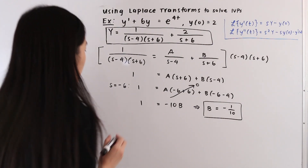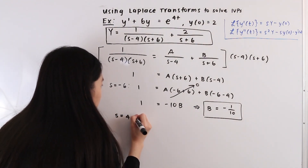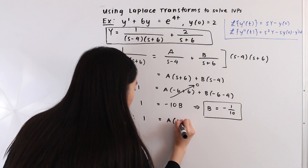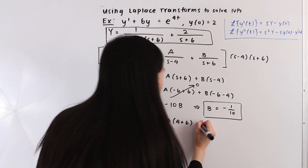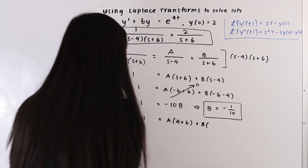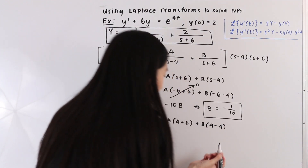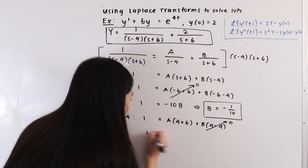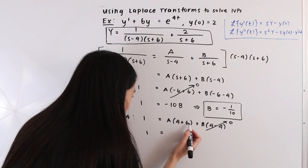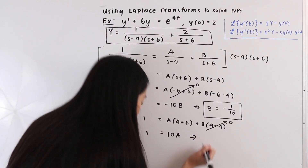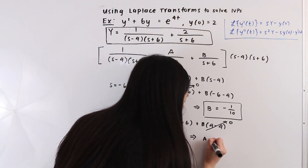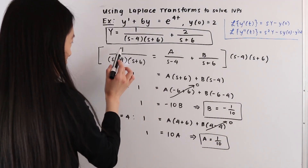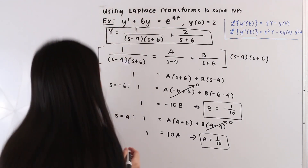Next, setting s = 4: 1 = A·(4 + 6) + B·(4 - 4). Since 4 - 4 = 0, that term vanishes and we get 1 = A·10, so A = 1/10. Therefore we can rewrite 1/[(s - 4)(s + 6)] as (1/10)·1/(s - 4) - (1/10)·1/(s + 6).